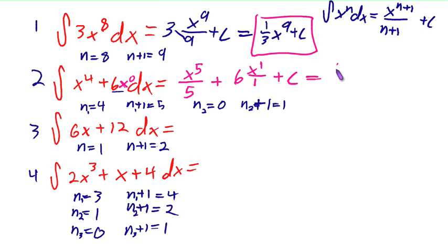So, this is going to give us 6x to the 1 over 1 plus c. Well, this, of course, just becomes x, so this all simplifies to 1/5 x to the 5th plus 6x plus c.